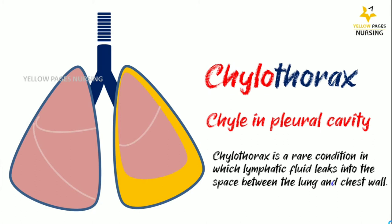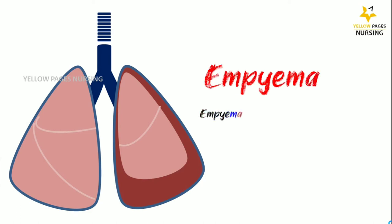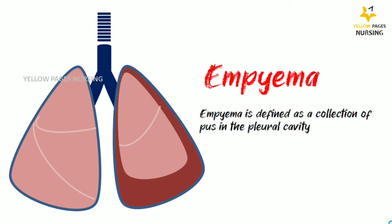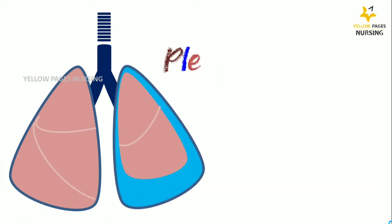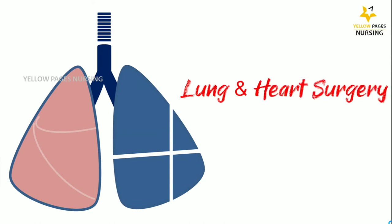Next is empyema, defined as a collection of pus in the pleural cavity. Next is pleural effusion — a buildup of fluid between the tissues that line the lungs and the chest wall. Some lung and heart surgeries may also require intercostal drainage postoperatively.